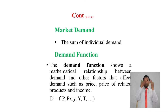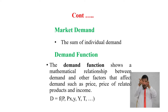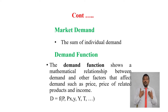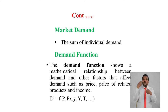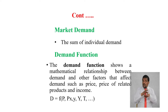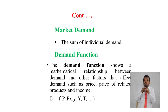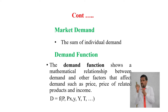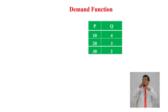The market demand is the sum of individual demand. The demand function shows a mathematical relationship between demand and other factors that affect demand, such as price, price of related goods, income of consumer, taste or preference, and the likes. These are all the factors that affect demand for a commodity.